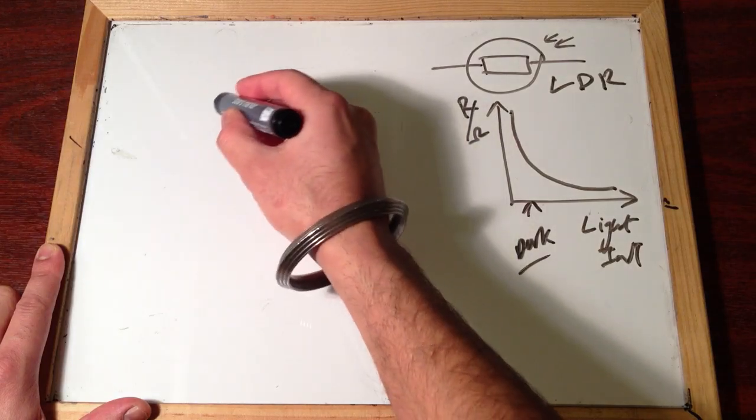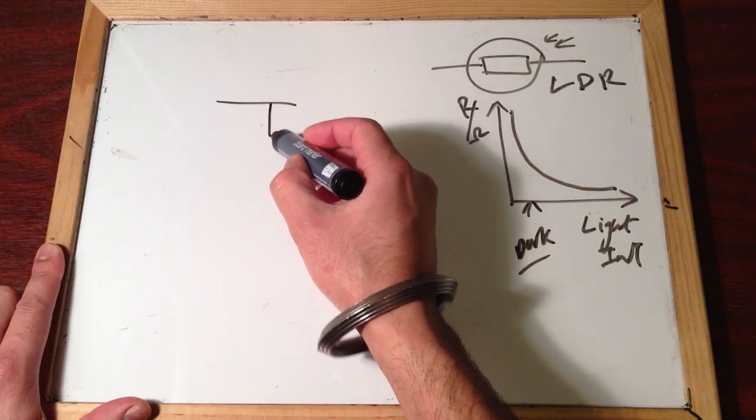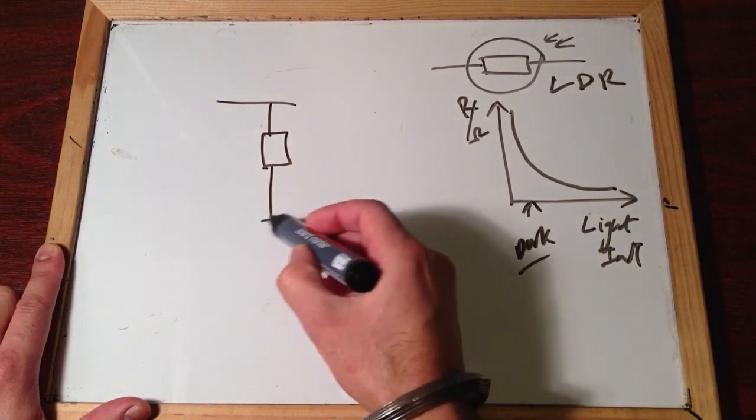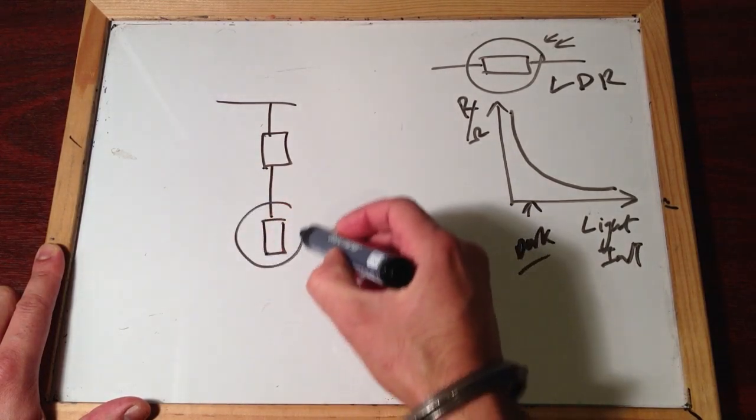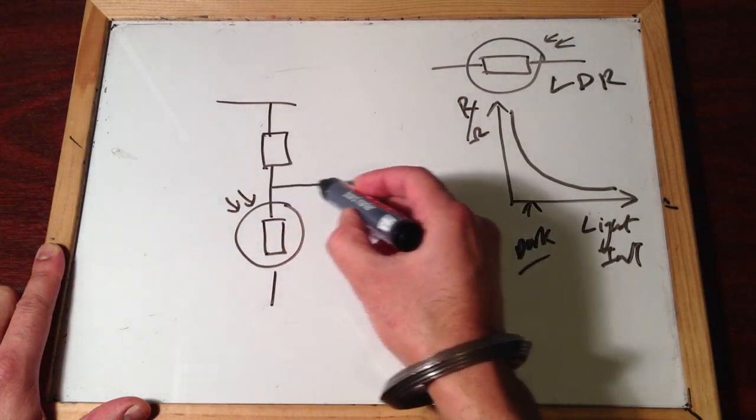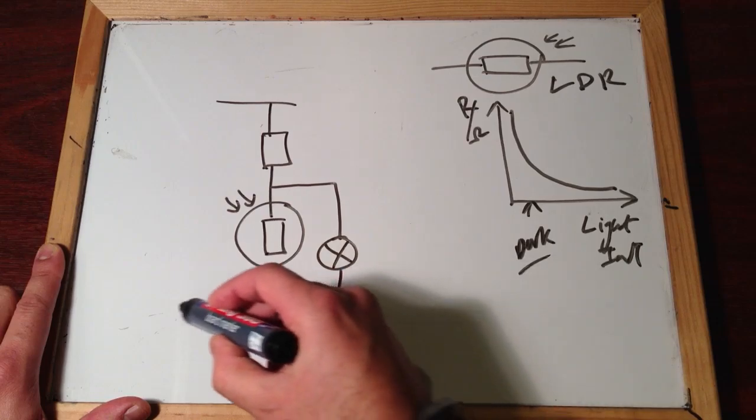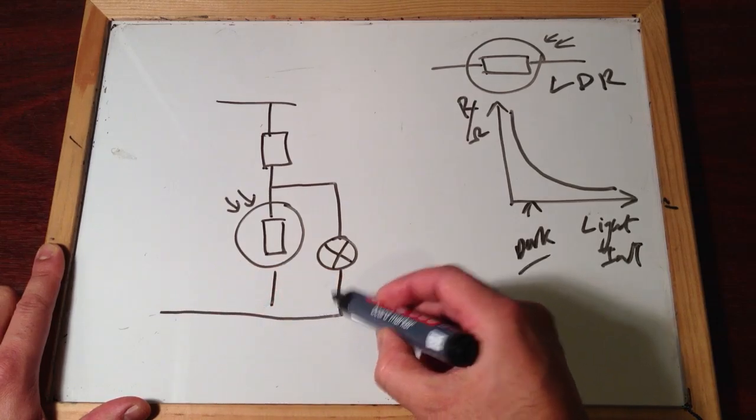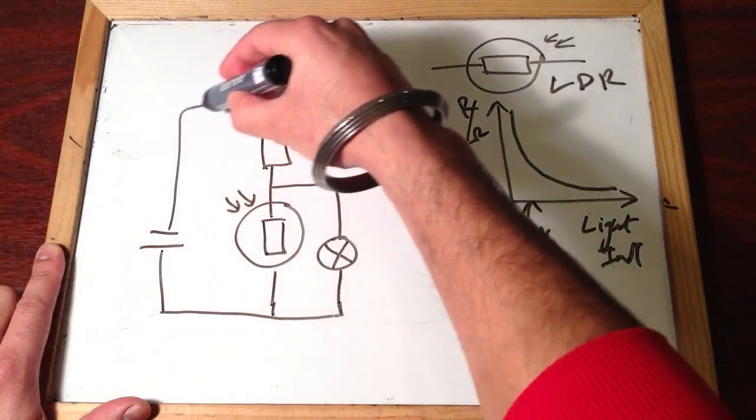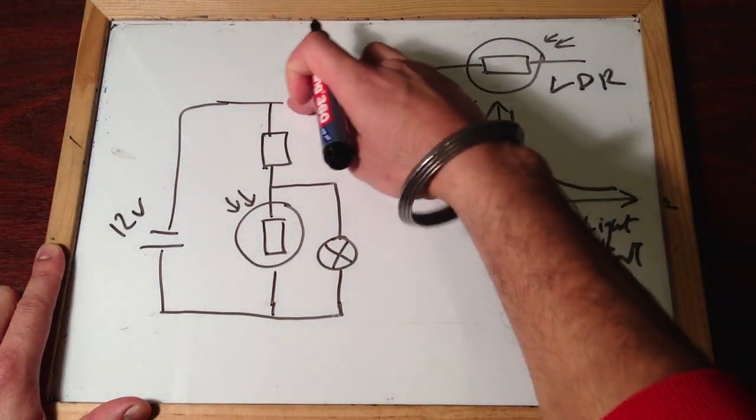what we have is a circuit, and what I do is I have a resistor here, and I have an LDR here, this is the LDR, and then have a bulb here, and this all connects together to a battery supply, for example, which could be around about 12 volts.